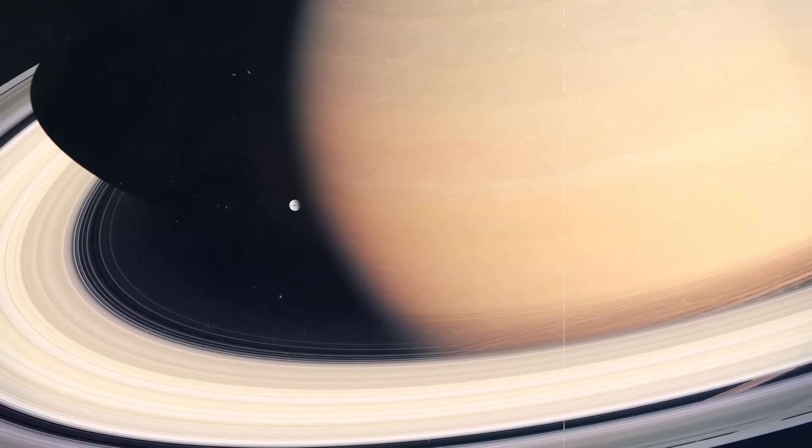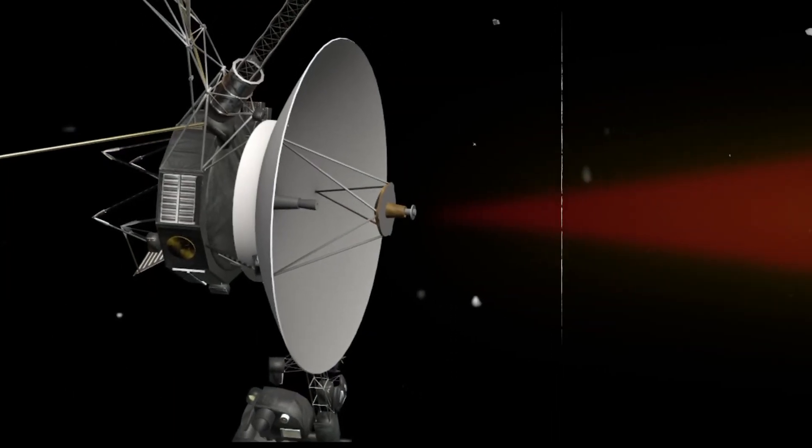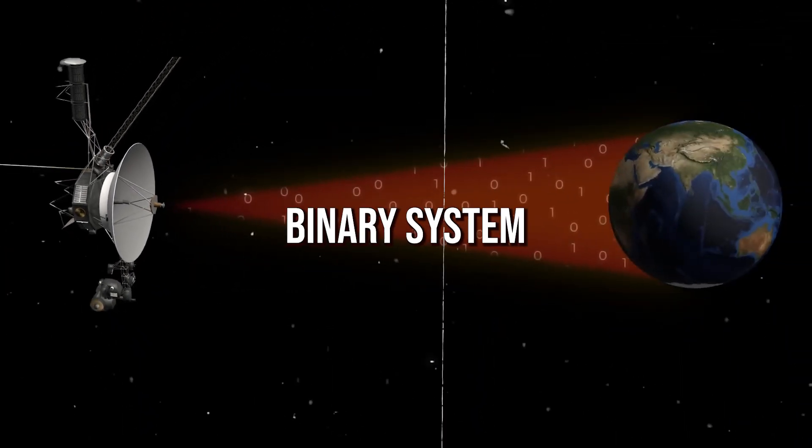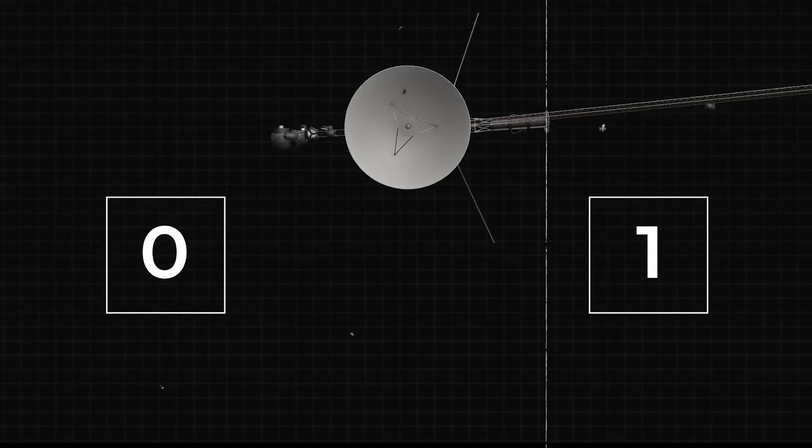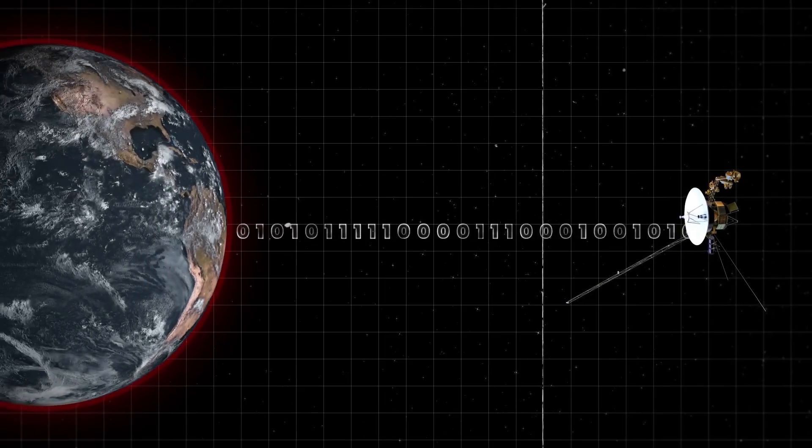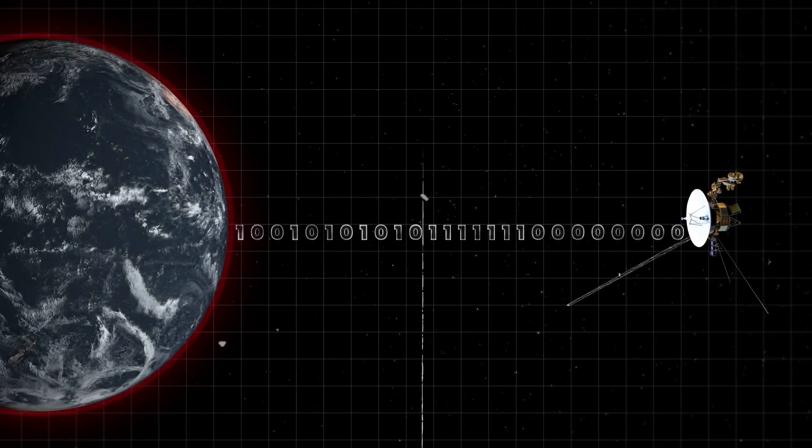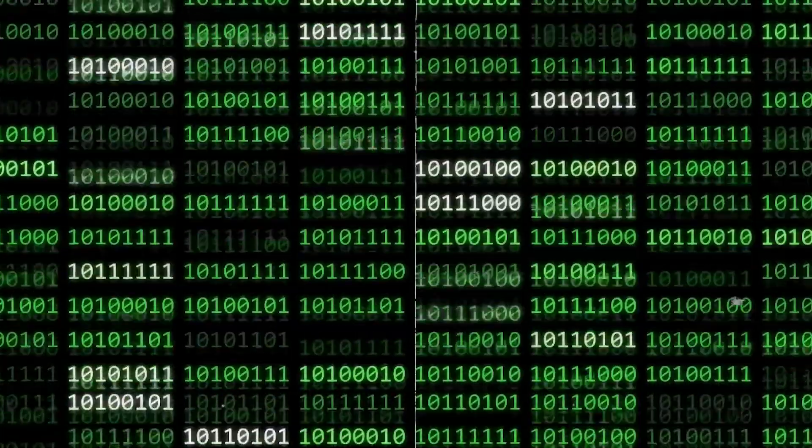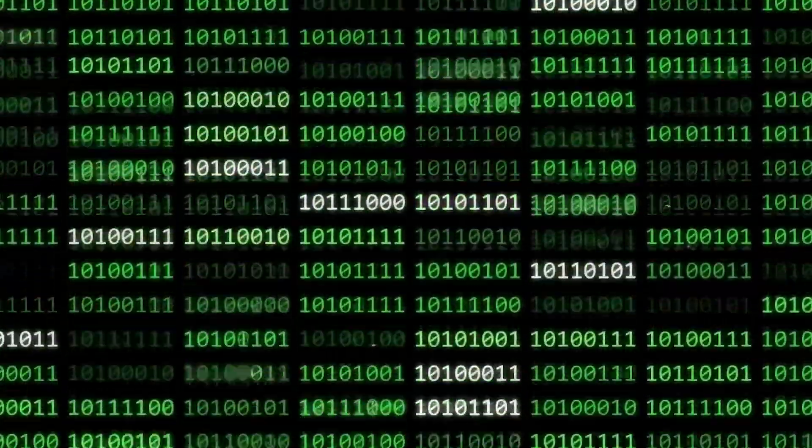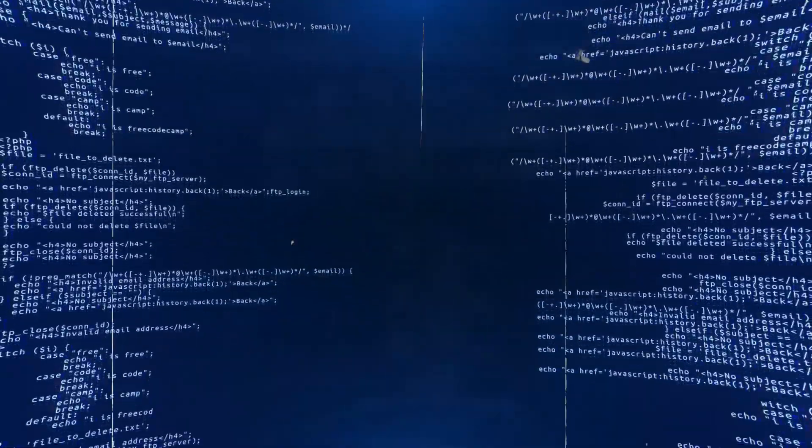The Voyager spacecraft, like computers on Earth, communicates using the binary system. It uses only two numbers, 0 and 1, which represent various types of information. Each 0 or 1 is called a bit, and combinations of these bits can convey everything from numbers and letters to more complex data, such as images or sounds.